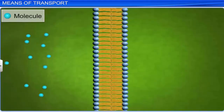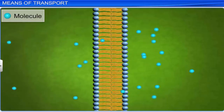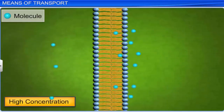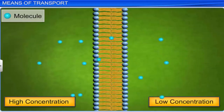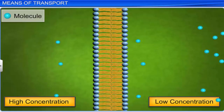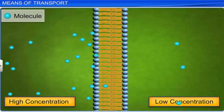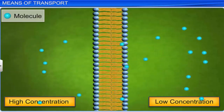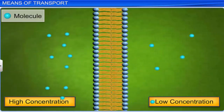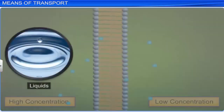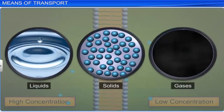In diffusion, the molecules move in a random manner, generally moving from a region of high concentration to lower concentration. Diffusion is a passive process — it requires no expenditure of energy. It is a slow process, independent of a living system, and can take place in all states: liquid, solid, and gaseous.